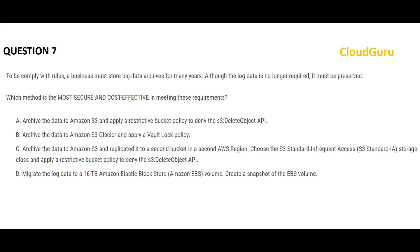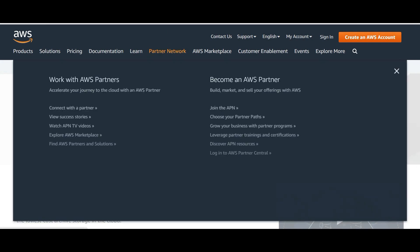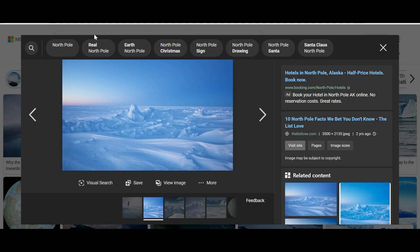Let's look at this next question — a very easy one. It wants to store archives for many years, and the archive should be preserved, meaning immutable: nobody should be able to make modifications. Whenever you think about archiving, always think about S3 Glacier. It is meant for storing archives at the lowest cost with millisecond access. S3 Glacier is the North Pole or Antarctica of AWS — a cold storage.